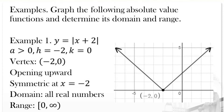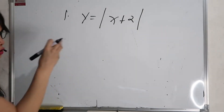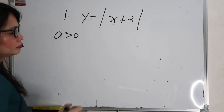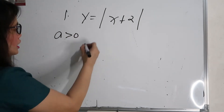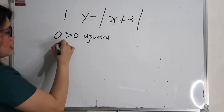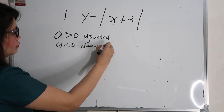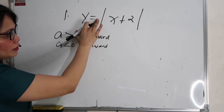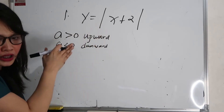Let's say the given is y equals the absolute value of (x plus 2). First, we need to identify a. If a is greater than 0, the graph opens upward. If a is less than 0, it opens downward. In this particular example, the given sign is positive, so it opens upward.